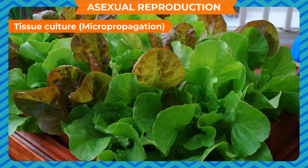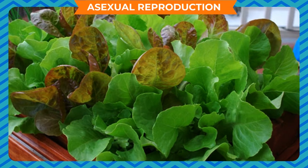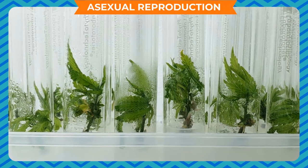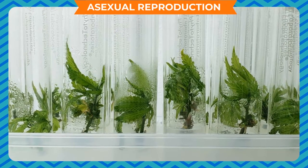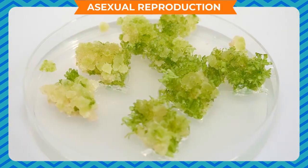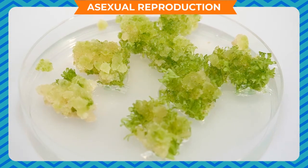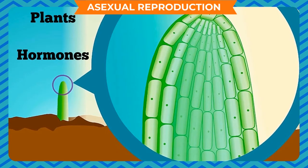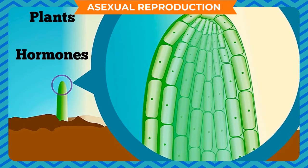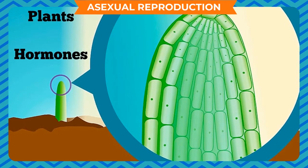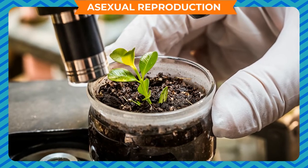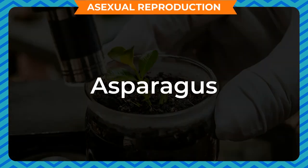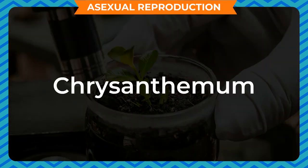Tissue Culture (Micropropagation): This method is done in well-developed laboratories. A piece of tissue is cut from the plant and kept in a nutrient medium under controlled conditions. The cells of the tissue divide rapidly to form an organized mass of cells called callus. The callus is transferred into another nutrient medium containing plant hormones, causing them to develop into new plantlets. These plantlets are then transferred to moist soil for further growth. Plants like orchids, asparagus, and chrysanthemum are now grown by this method.